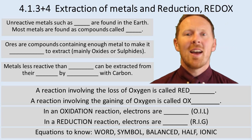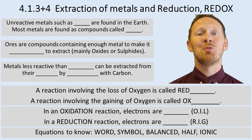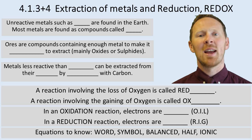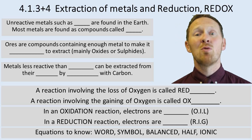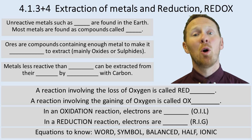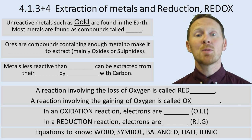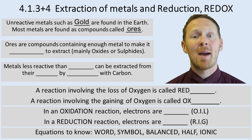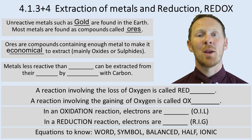In sections 4.1.3 and 4.1.4 we're looking at extraction of metals, reduction, and redox reactions. There's a range of metals in the reactivity series, and some right at the bottom end are unreactive. Unreactive metals such as gold, platinum, or sometimes silver are found in the earth. But most metals are found as compounds called ores — metal compounds that contain enough of the metal to make it economic to extract.